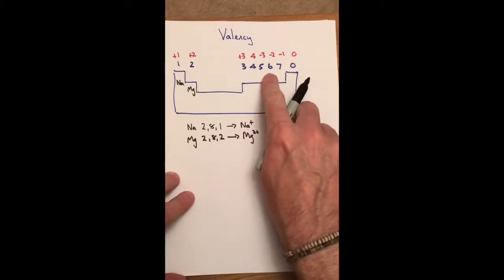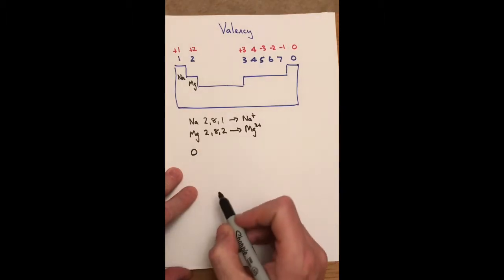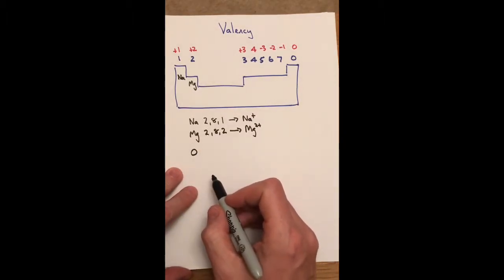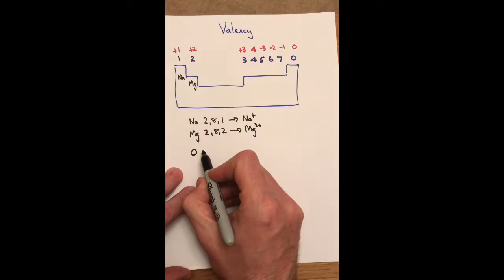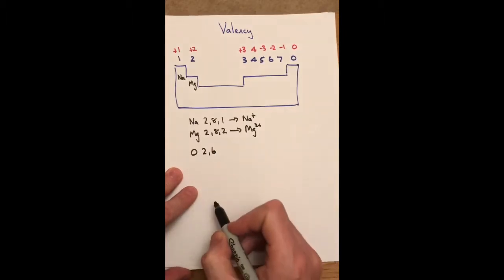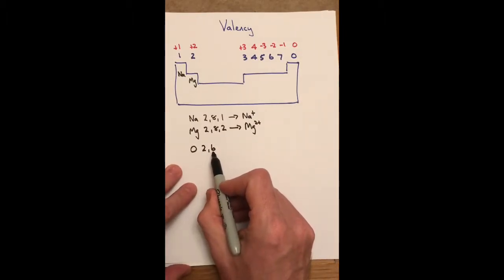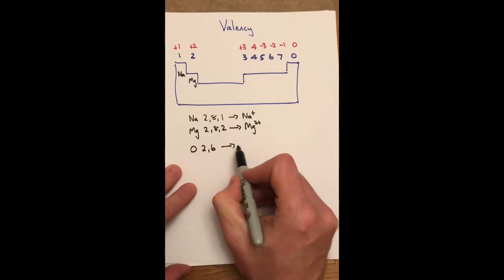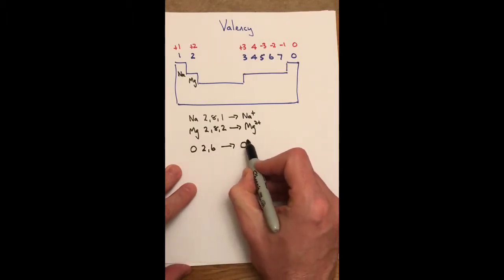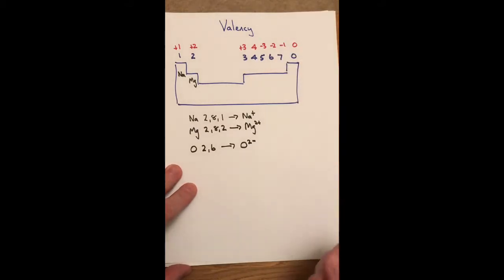If we jump over, let's try one over here, let's try something in group six. In group six, we've got oxygen. Oxygen has got a proton number of eight, that gives it eight electrons as well. So they're arranged two, six. Two, six means it's not stable. How does it become stable? It becomes stable by gaining two. If you gain two electrons, electrons are negative, it becomes two minus, which is why above the six is a two minus.